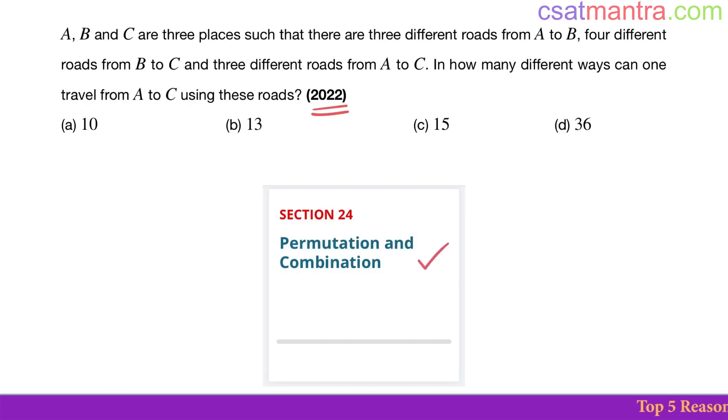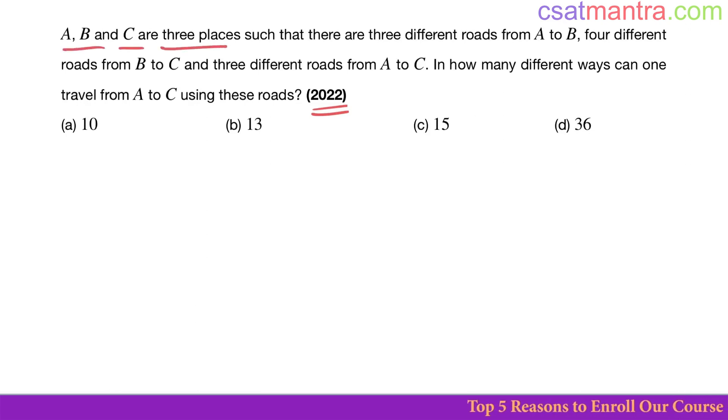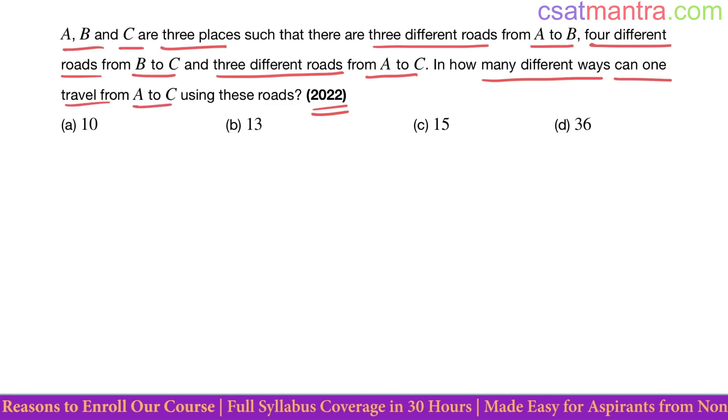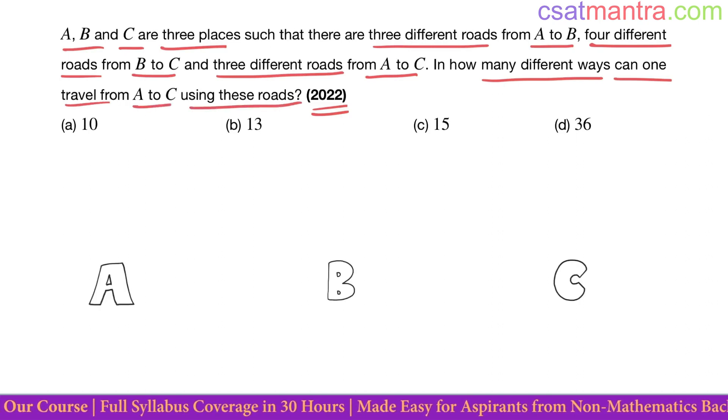This is a 2022 question based on permutation and combination. A, B, and C are three places such that there are three different roads from A to B, four different roads from B to C, and three different roads from A to C. In how many different ways can one travel from A to C using these roads?